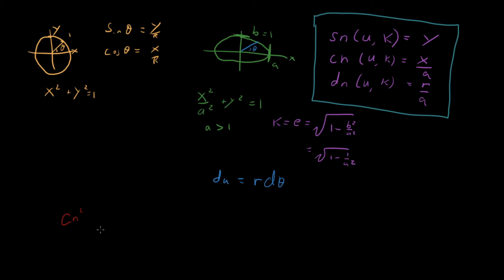But so this right here, x squared over a squared, that's cn squared plus y squared. That's sn squared equals 1. So we have a property here that's just like what we have in circular trig. In trig, we have sine squared plus cosine squared equals 1. Here we have sn squared plus cn squared equals 1. So that's a nice generalization from trig.